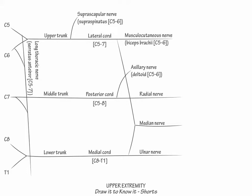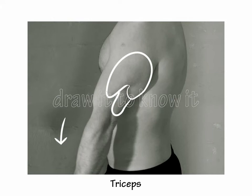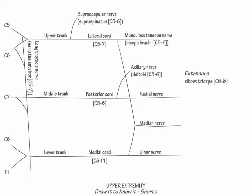Generally, the radial nerve innervates the upper extremity extensors. It innervates the triceps muscle C6 to C8, which provides elbow extension, and extensor carpi radialis C6 to C7,